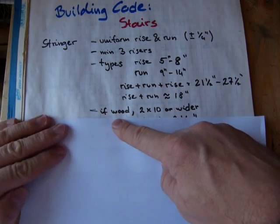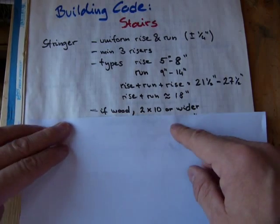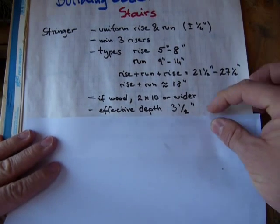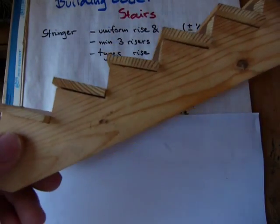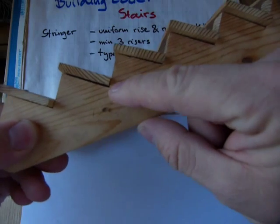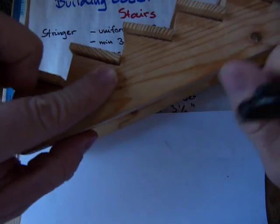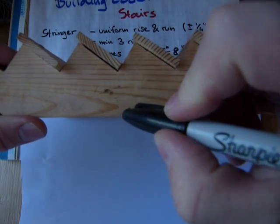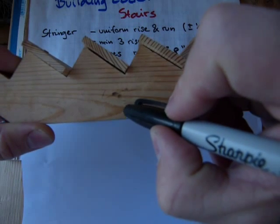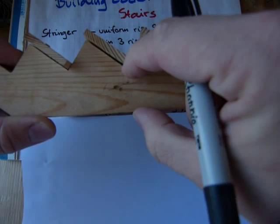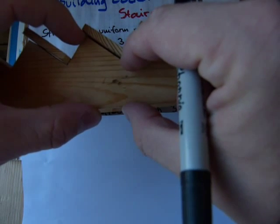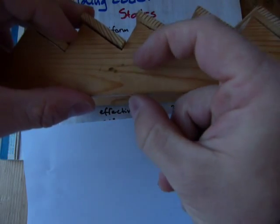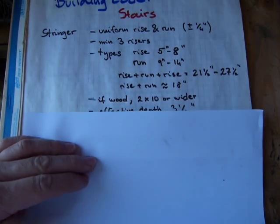If the stair stringer is made of wood, the building code specifies that it'd be a 2 by 10 or wider, like a 2 by 12 or even wider. It's got to have an effective depth of at least 3.5 inches. That's the size of a 2 by 4. I'll show you where the effective depth is, because this is important. When you cut the zigzags out of a stair stringer, the effective depth is measured here. The effective depth is measured from the edge of the stair stringer perpendicular to the edge of the stringer here. So this has to be at least 3.5 inches. So if you start with a 2 by 10, you've got to have a 2 by 4's thickness here at the effective depth. This is important. If it's too skinny here, if the effective depth is too little, it's just going to snap like a twig.